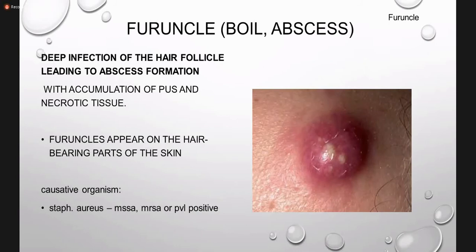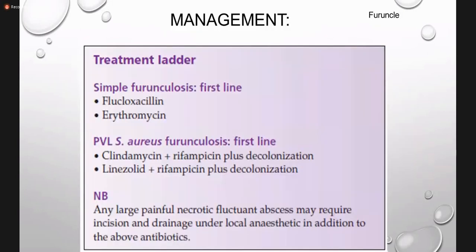The fifth is furuncle, boil, or abscess. Folliculitis involves only the ostium of the hair follicle superficially, but the furuncle is a deeper infection of the hair follicle, leading to abscess formation with accumulation of pus and necrotic tissue. It is a painful condition appearing in hair-bearing areas. The organisms are Staph. aureus and streptococci. Oral antibiotics are mostly used; for large painful necrotic abscesses, incision and drainage (I&D) is needed.